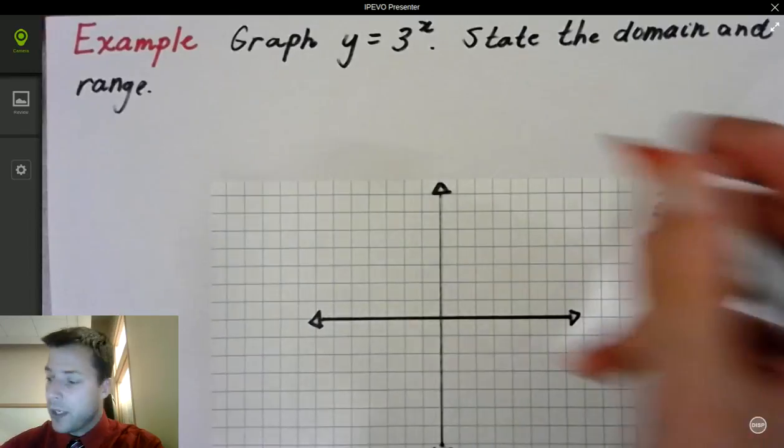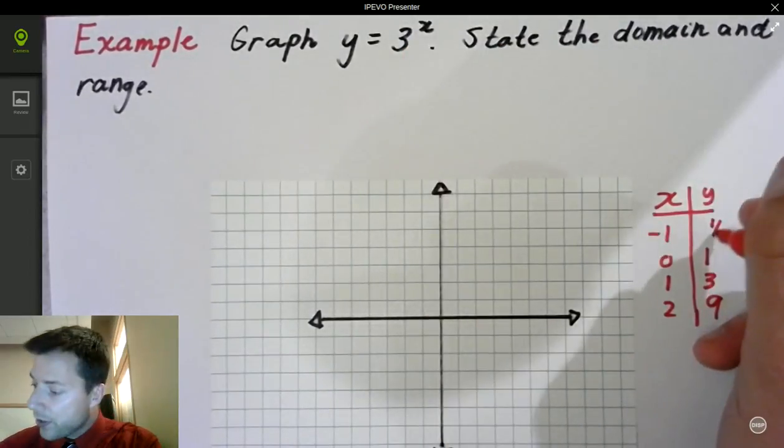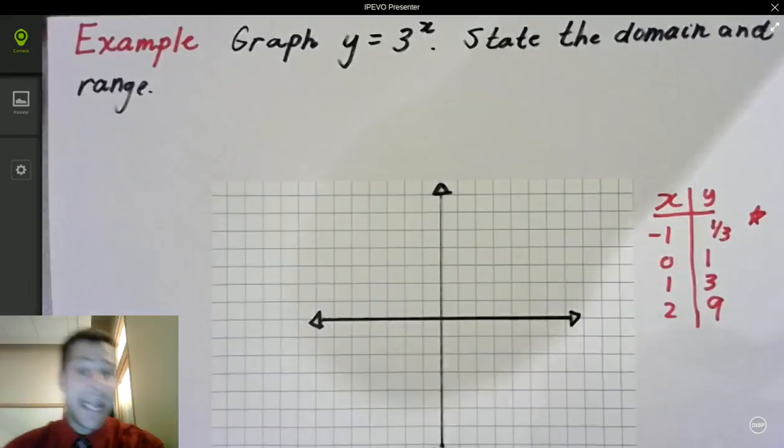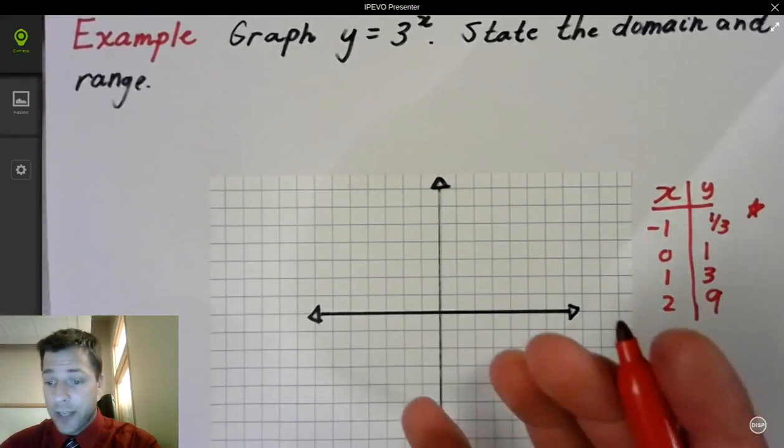And then if I use negative 1, 3 to the negative 1 power is 1 third. So be very careful here, it's not negative. So you can create a table of values, and I've got enough to graph.